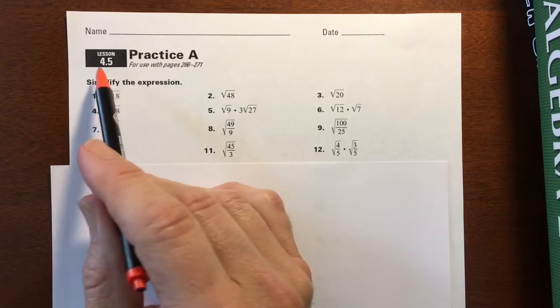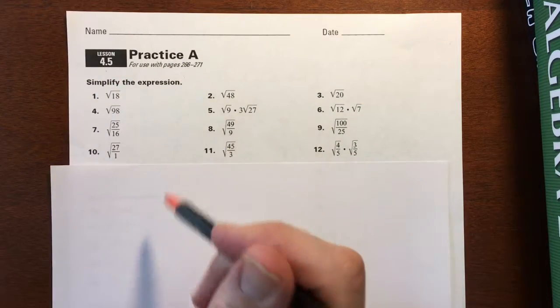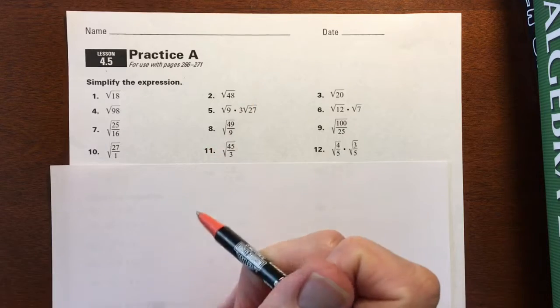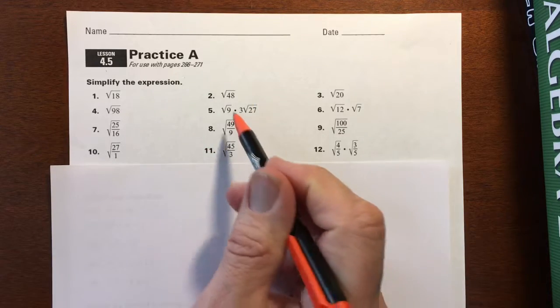A couple of examples from 4.5a and from b as well, if you're struggling with some of these, simplifying the radicals.